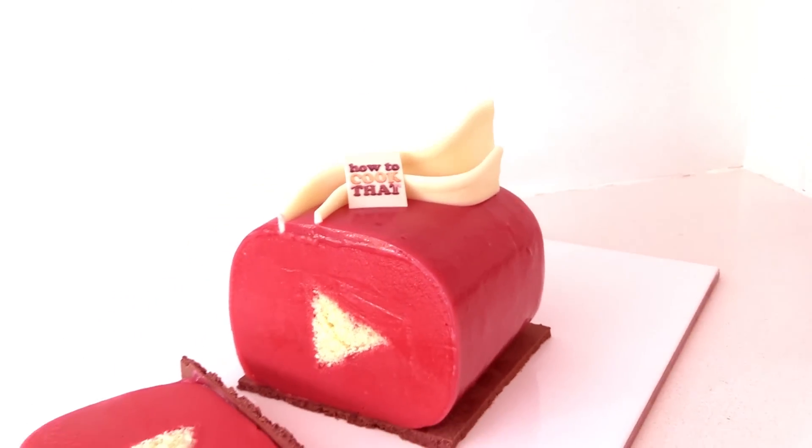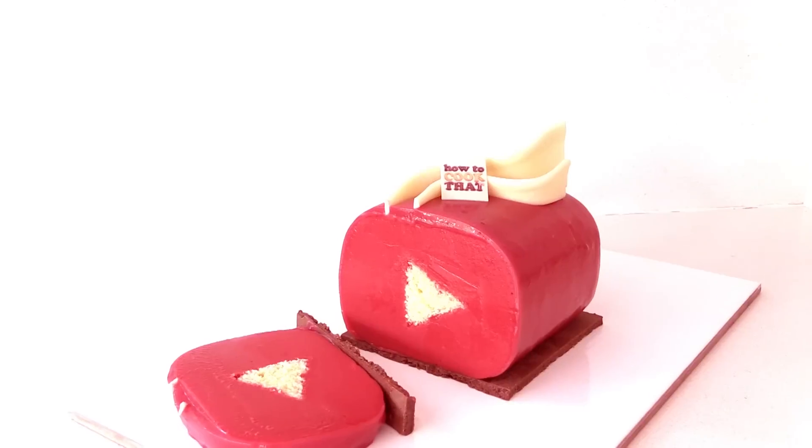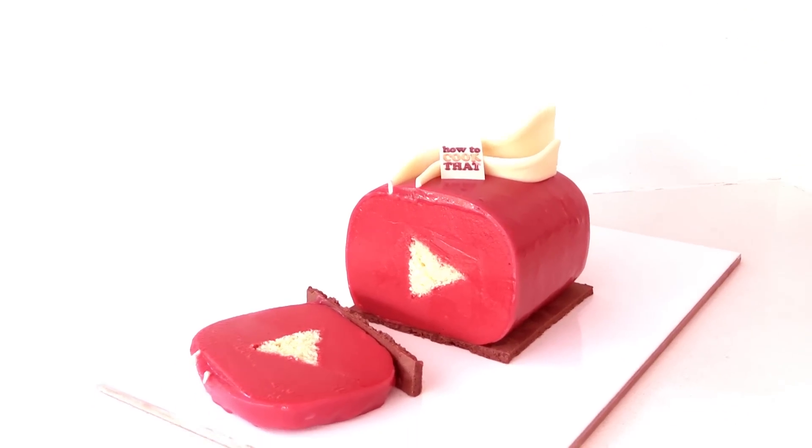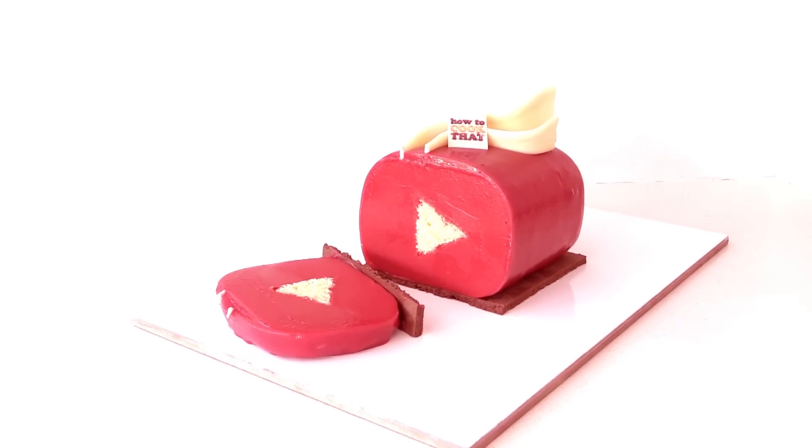Or you could just use cremeux like I did in the twitter cake recipe and that is going to give you a nice smooth middle instead of the cake has kind of a holey texture to it.